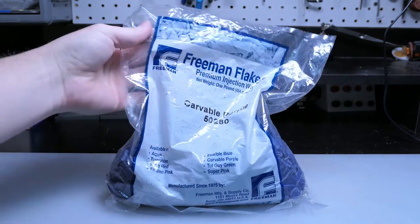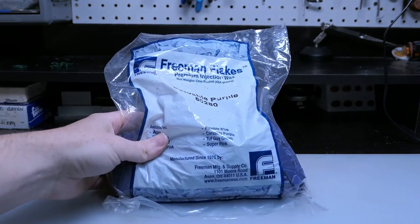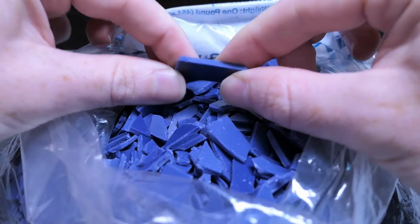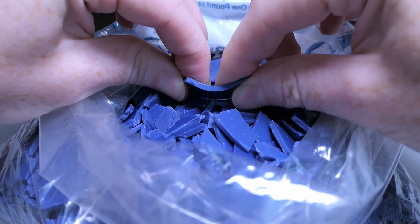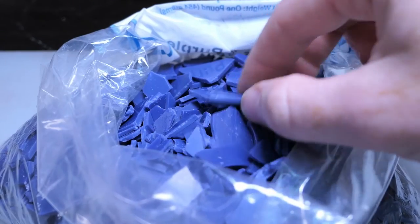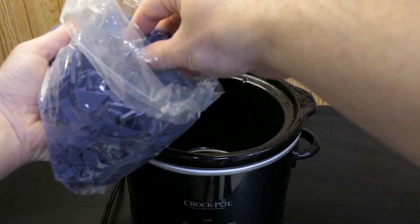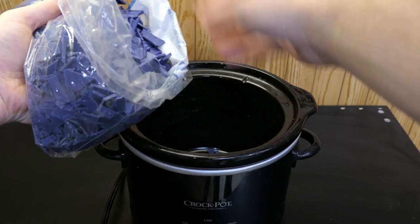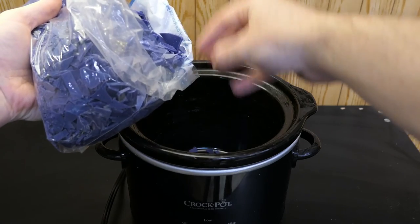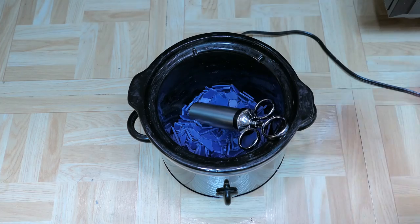I'm going to try using some Freeman Flakes Purple Injection Wax. I went with this brand because I like how flexible the wax is, which should help with removing the wax models from the mold without damaging any thin areas. I'm going to melt the wax with a cheap crock pot set to its lowest setting, and I'm also keeping the syringe inside the crock pot while the wax melts to get the syringe up to temperature.